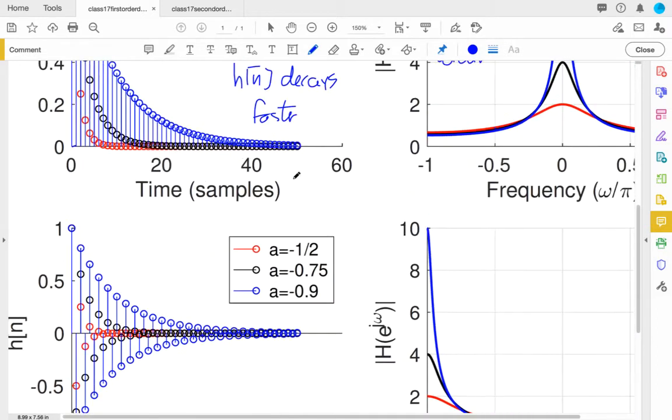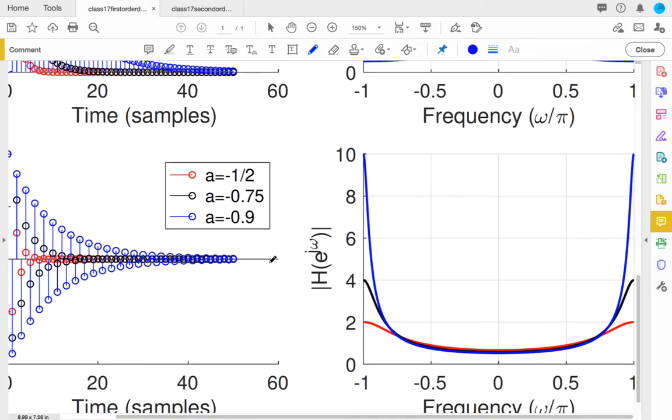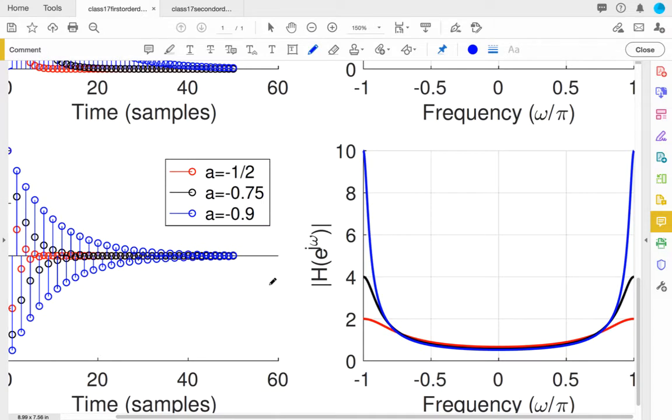But even while they're going back and forth, we see the same general behavior we saw in the top one, that the one with the magnitude of A the smallest, so the minus 1/2, the one that's furthest from minus 1 or closest to 0, dies off the fastest. The black one's in the middle, and the blue one at minus 0.9 dies off the slowest. And what happens by switching this A, if I go look at the frequency response,